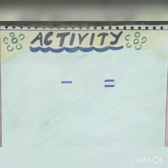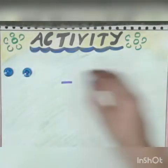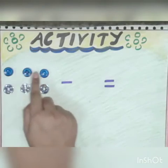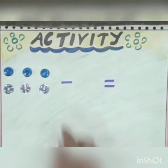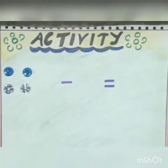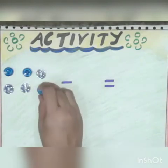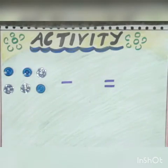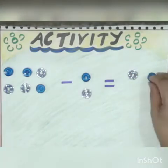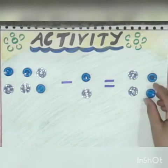Now let's do an activity to understand the concept of subtraction. I have some buttons with me — 1, 2, 3 blue buttons and 1, 2, 3 silver buttons. Now if I take away 2 buttons, how many buttons are left? 1, 2, 3, 4. I have 6 buttons and if I take away 2, I am left with 4 buttons. So 6 minus 2 is equal to 4.